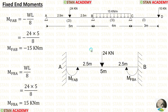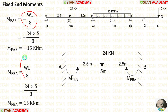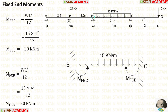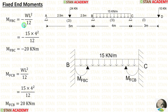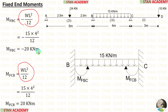Now let us calculate the fixed end moments. For span AB, there is a point load of 24 kN acting at the center. The formulas for fixed end moments are minus WL over 8 and positive WL over 8, giving us M_AB and M_BA. For span BC, there is a UDL of 15 kN/m acting for the full span. The formulas are minus WL² over 12 and positive WL² over 12, giving us M_BC and M_CB.